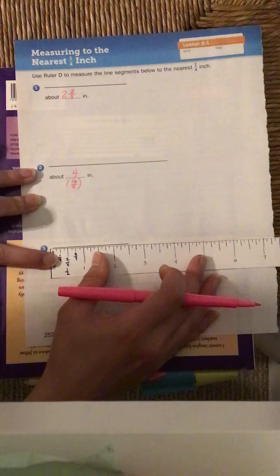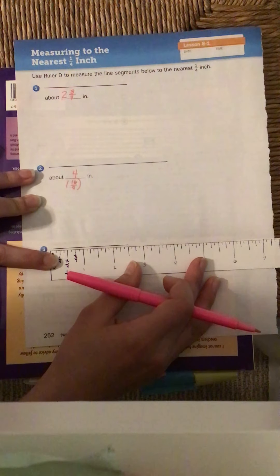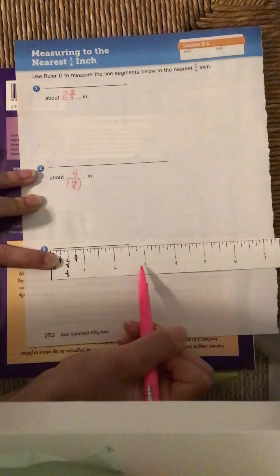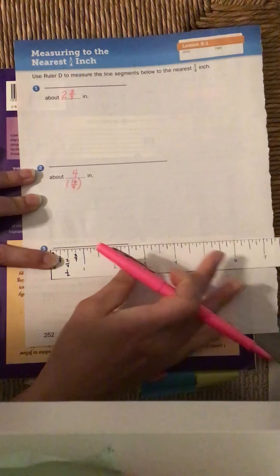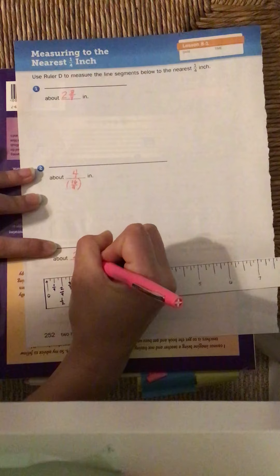The last one, we line it up again. I look where it hits. So I notice it goes past my 2 inch mark again, but doesn't get to 3. I notice it's halfway between 2 and 3. So that means it's going to be 2 1/2 inches.